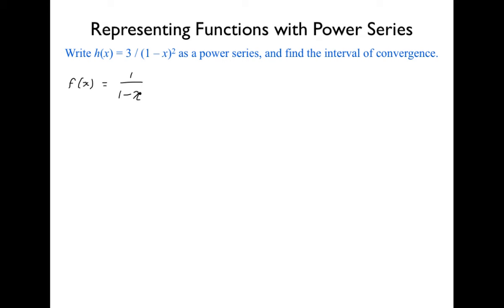So f(x) = 1/(1−x) is as easy as could be. Write out the summation notation for f and the first four or five terms. It's just the sum from n=0 to infinity of x^n, giving us 1 + x + x² + x³ + .... Now we're going to take F prime, and we'll take the derivative in all three forms — summation notation, the closed form, and the individual terms — and check that they're consistent.